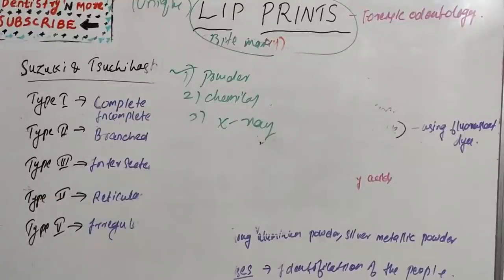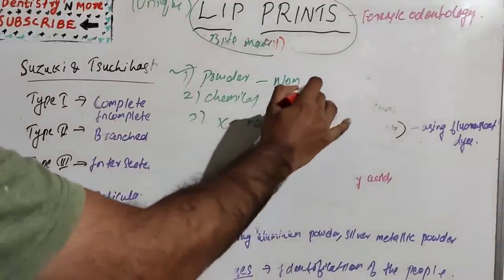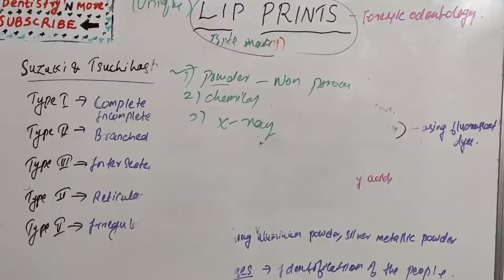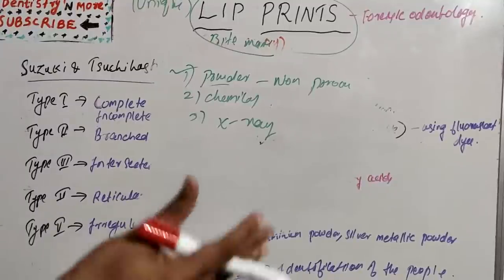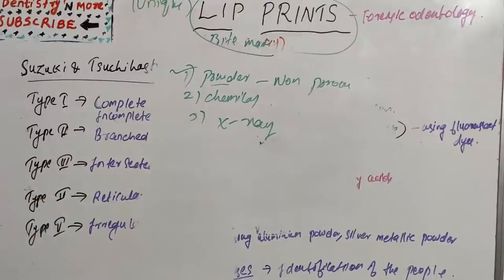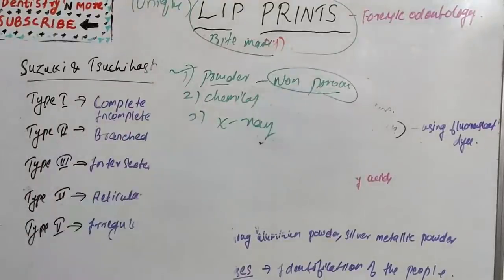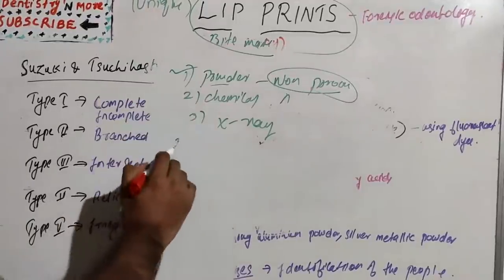The powder method is a technique usually used to identify latent prints on non-porous surfaces such as glass, marble, metal, plastic, and finished wood — very flat and glossy surfaces. When powder is distributed on the surface, it adheres to the residue deposited from the lip, allowing investigation to find the print. This is similar to the powder-splashing technique seen at crime scenes in movies.